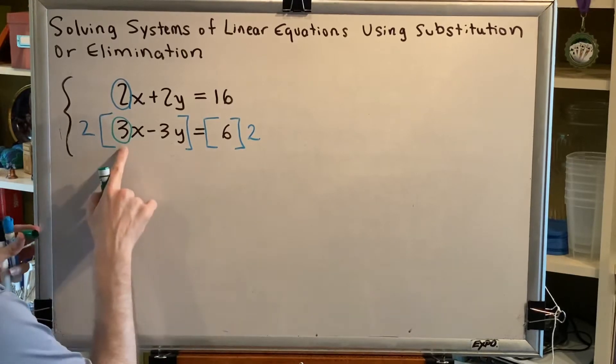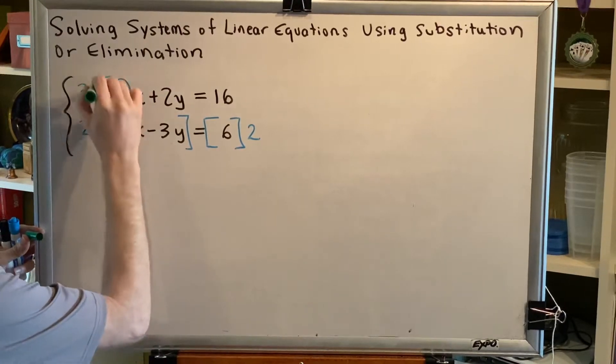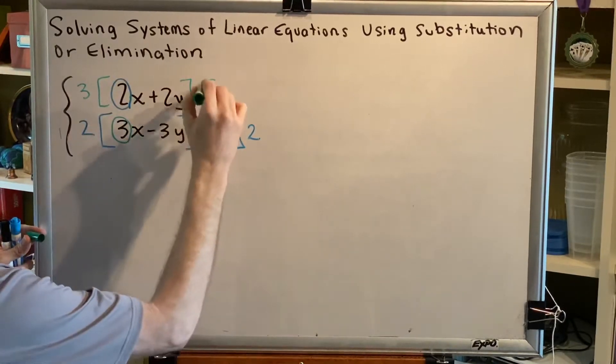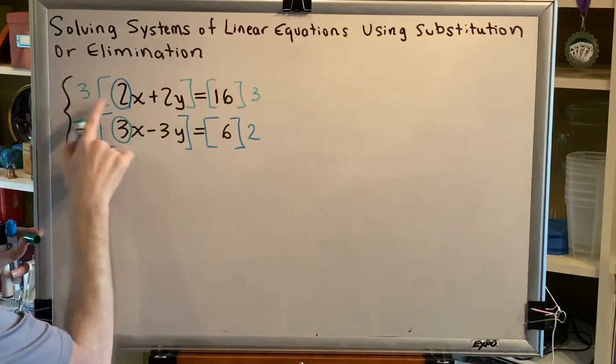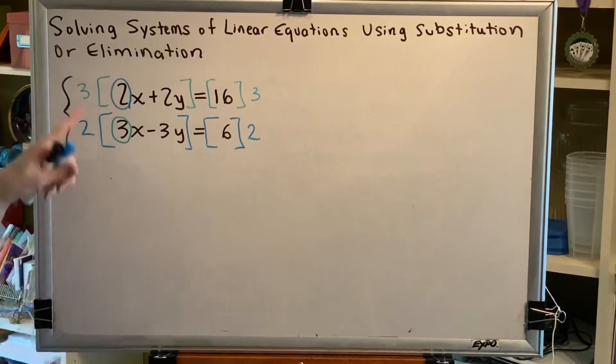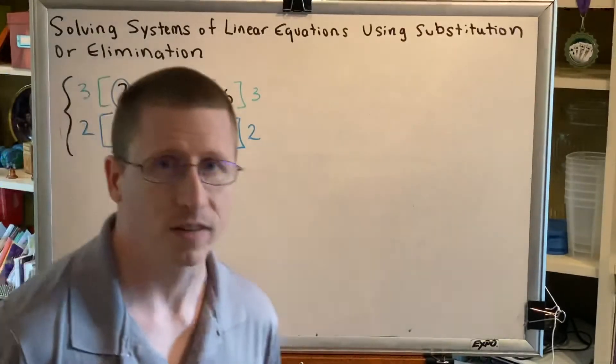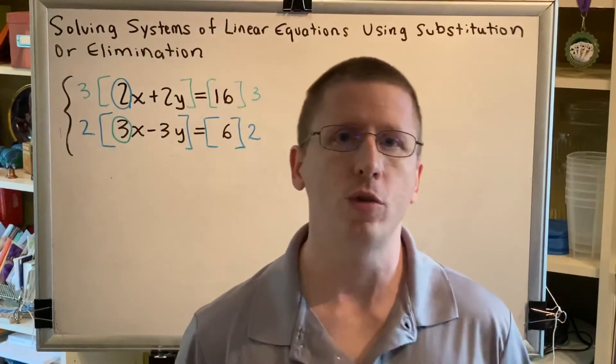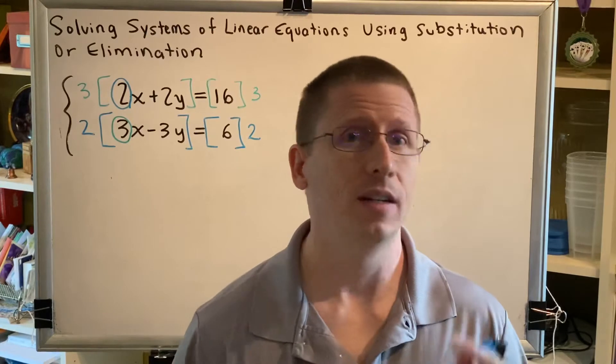Using a similar idea, the 3 from the bottom can be used to multiply both sides of the top equation, and when this 3 is distributed to the 2x, 3 times 2x is also 6x. So we've made the two terms the same, 6x, 6x.